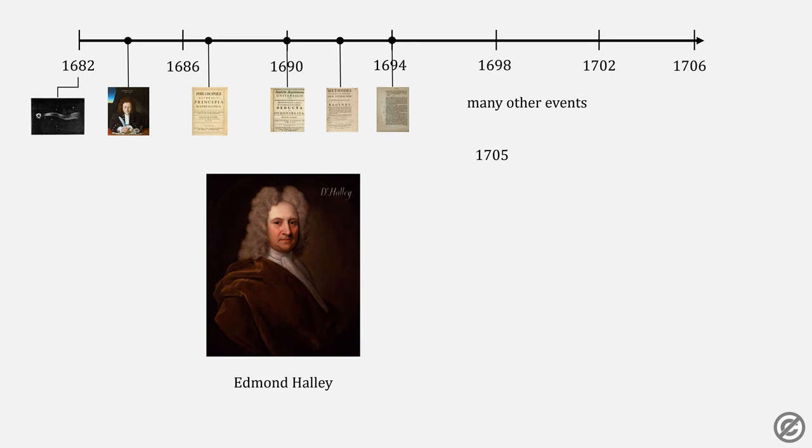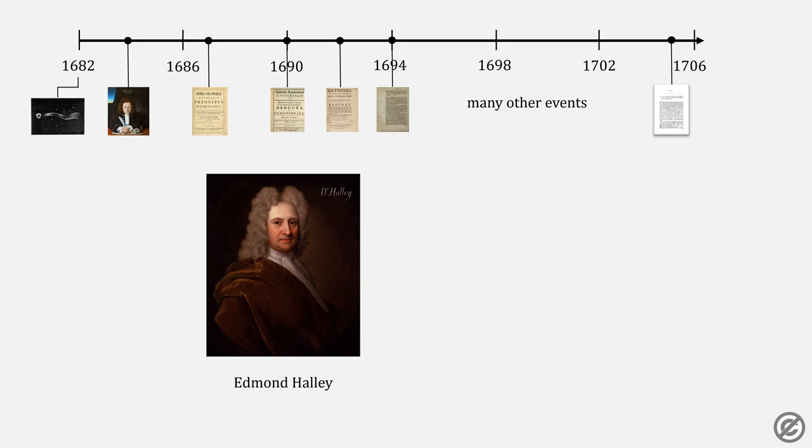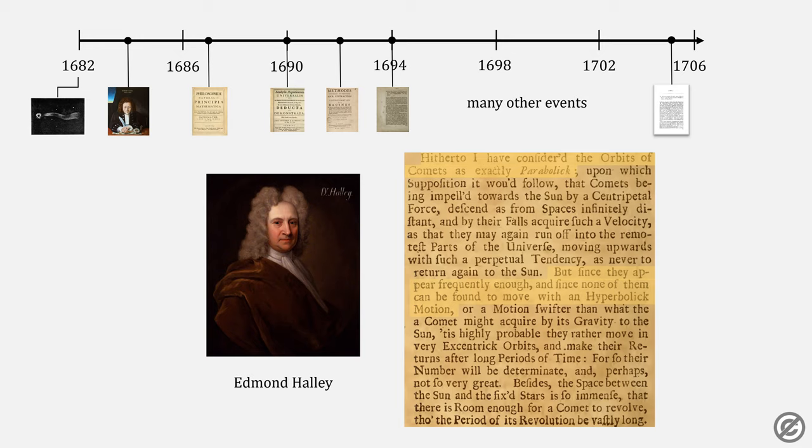We'll now skip to 1705, when Halley published what is probably his most famous work, his Synopsis of Comets. In the English translation, he writes: Hitherto have considered the orbits of comets as exactly parabolic.